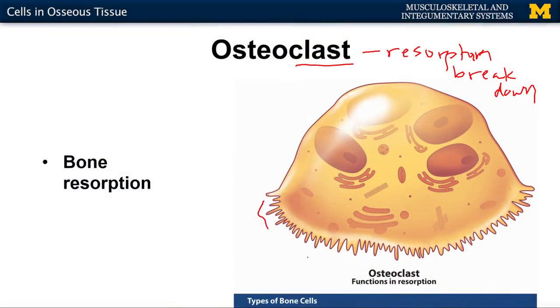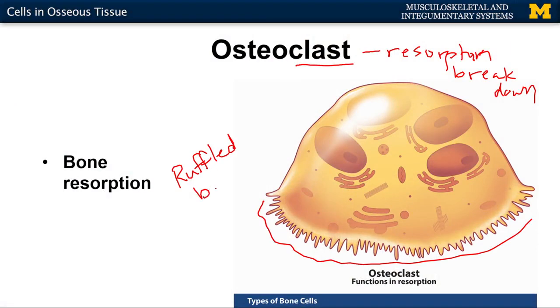A few notable features of osteoclasts: they are huge cells compared to the other bone cells. They also have a ruffled border — a highly enfolded region of the plasma membrane — from which lysosomal enzymes are secreted. These enzymes are very high in acid content in order to break down the bone.